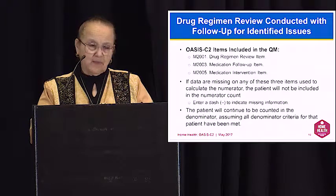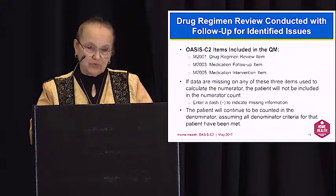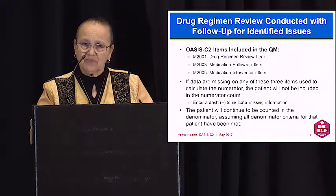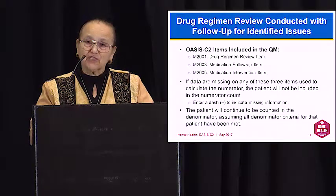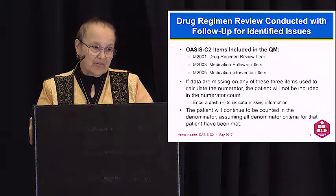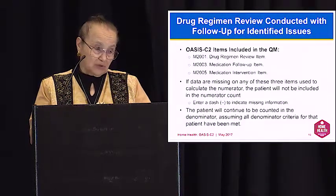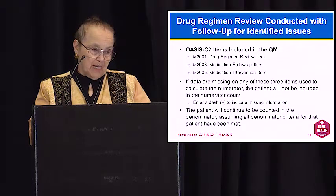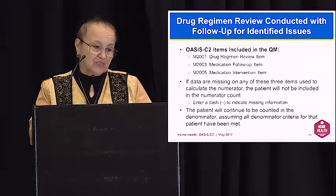The numerator applies to the number of quality episodes where the agency conducted a drug regimen review at start or resumption of care, or the patient is not taking any medications. It also includes episodes where, if a potentially clinically significant medication issue were identified at any time during the quality episode, the agency contacted a physician or physician-designee and completed the prescribed or recommended actions by midnight of the next calendar day. The denominator is the number of quality episodes ending with a discharge, transfer to an inpatient facility, or death at home during the reporting period. There are no quality episodes excluded from the denominator, and this measure is not risk-adjusted or stratified in any way.